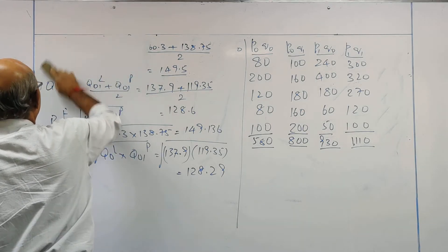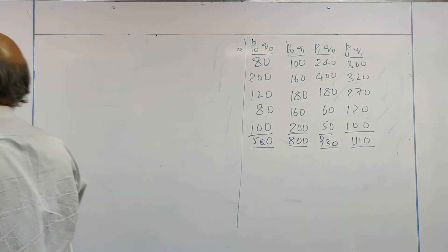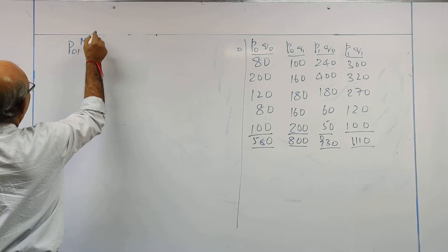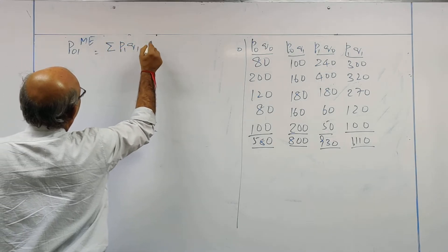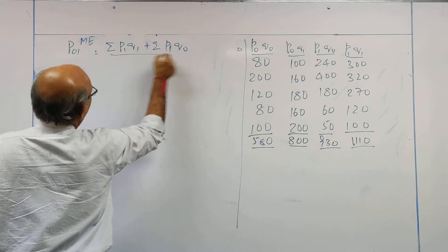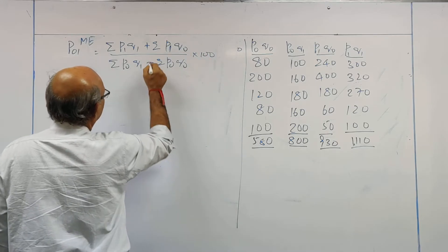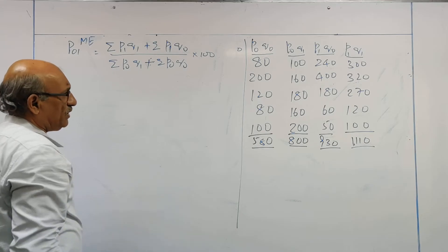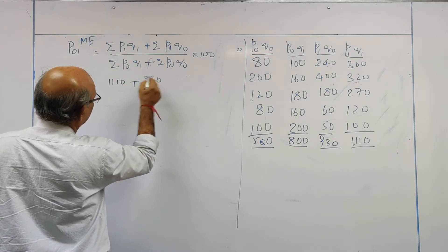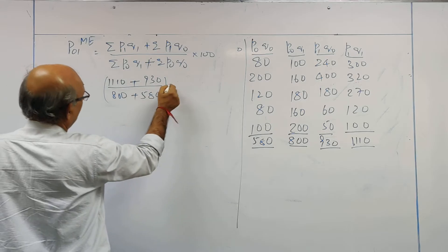Next: price index number by Marshall-Edgeworth. This is equal to summation of P1Q1 plus summation of P1Q0, divided by summation of P0Q1 plus summation of P0Q0, into 100. Values we have to substitute: P1Q1 total is 1110, plus P1Q0 which is 930, divided by P0Q1 which is 800, plus P0Q0 which is 580, multiplied with 100.